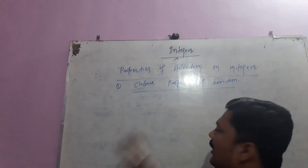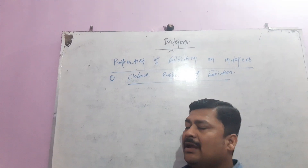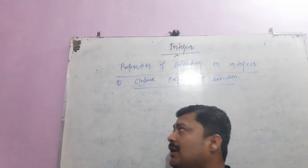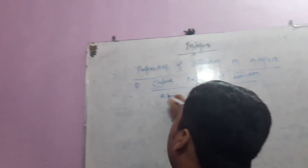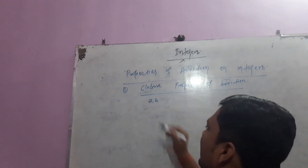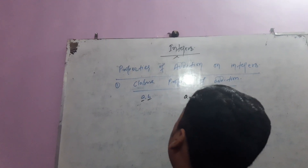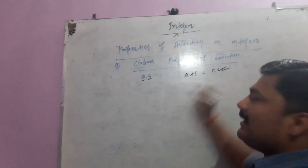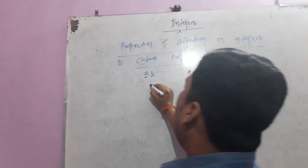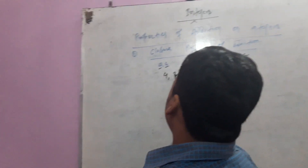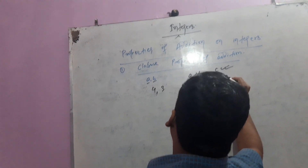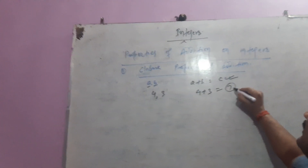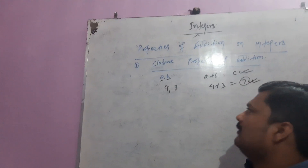According to the Closure Property, if we are adding two integers, then their sum will always be an integer. Suppose A and B are two different integers and their sum is C, then C will also be an integer. For example, 4 and 3 are both integers and their sum is 7, so 7 is also an integer.